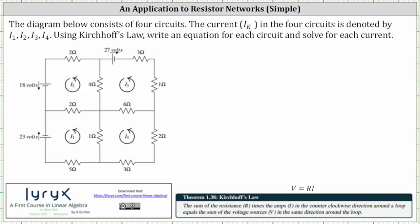The diagram below shows four circuits. The current I sub K in the four circuits is denoted by I sub one through I sub four. Using Kirchhoff's law, write an equation for each circuit and solve for each current. Kirchhoff's law states the sum of the resistance R times the amps I in the counterclockwise direction around a loop equals the sum of the voltage source V in the same direction around the loop.